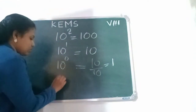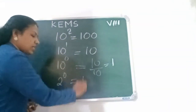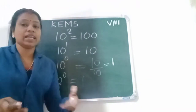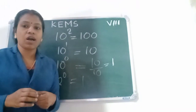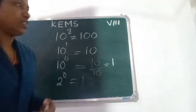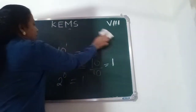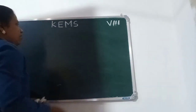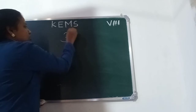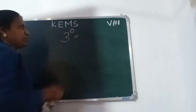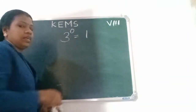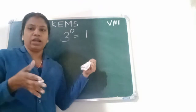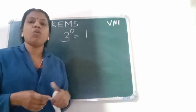What about 2 raised to 0? It is equal to 1. And 3 raised to 0 equals 1. Any number raised to the power 0 is 1. Actually, 3 raised to 0 is 3 by 3, which equals 1.